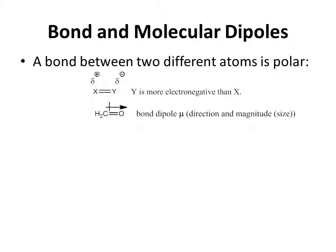In the specific case of formaldehyde, H2C double bond O, if you look just at C double bond O, you can see that there is an arrow written above that bond, and that arrow is the bond dipole mu. The arrowhead points toward the partially negative oxygen atom, which would be Y, and the plus end of the arrow is centered over the partially positive carbon atom, which would be X.